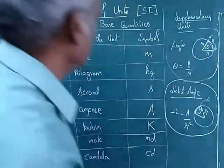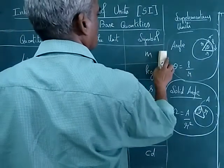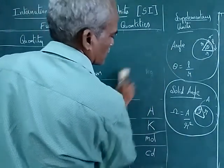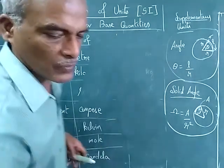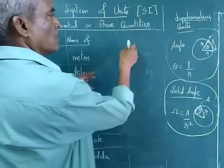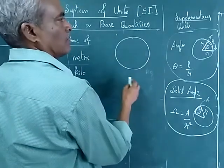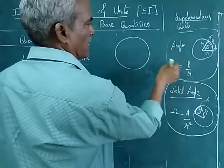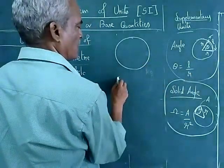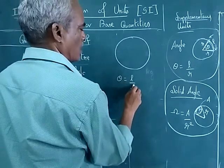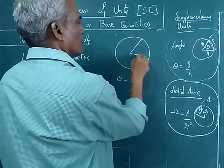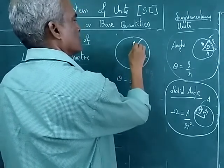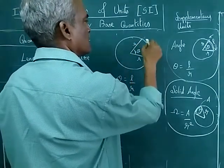First case. See, in the case of circle. We told theta, theta is equal to L by R. This is theta, and this is R, here also R, and this is L.